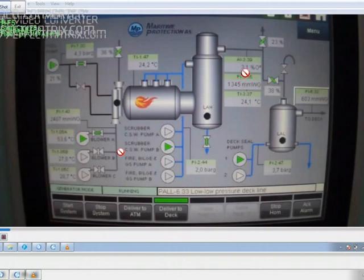You can see here right now the oxygen is 3.1%. Temperature here is 24.1. The pressure is 1345 mm WG here. You can see the valve throttle 38%.